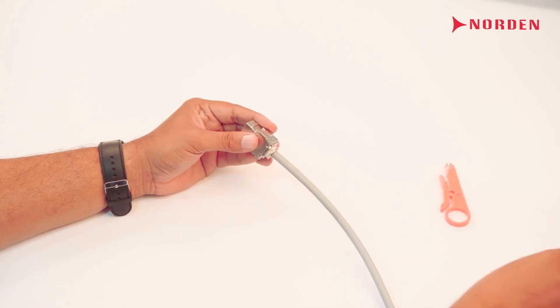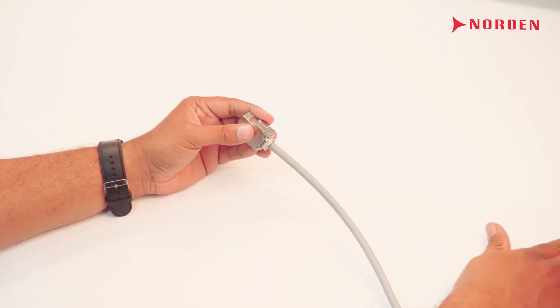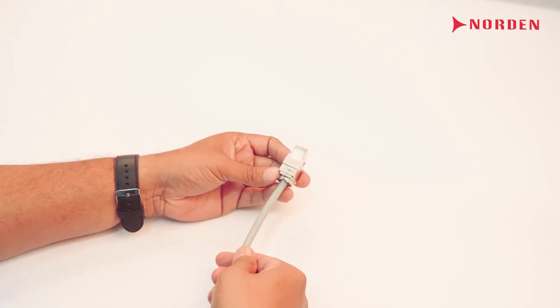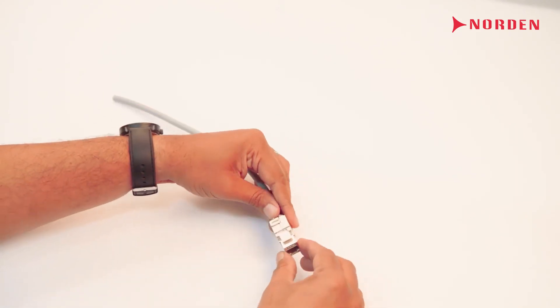Once trimmed, that's it. We've finished. We've terminated the Norden Cat 6A shielded toolless keystone jack in an easy and rapid way.